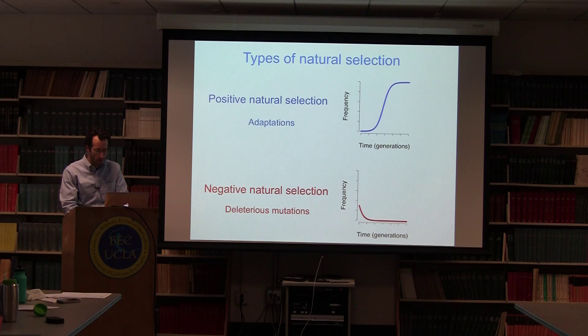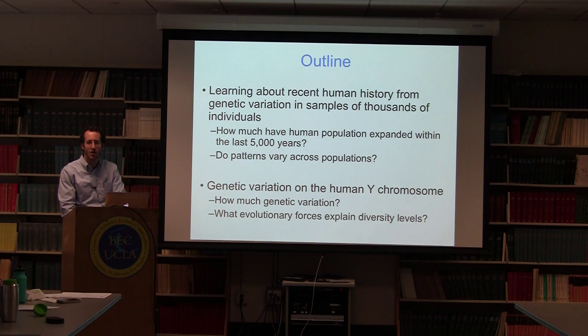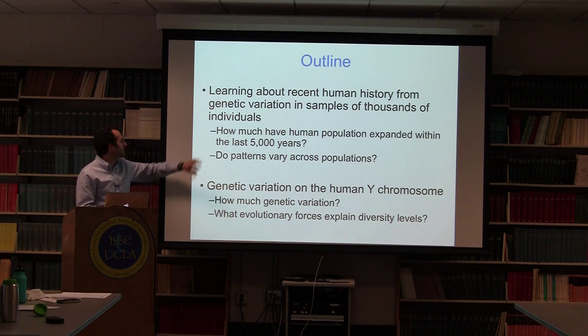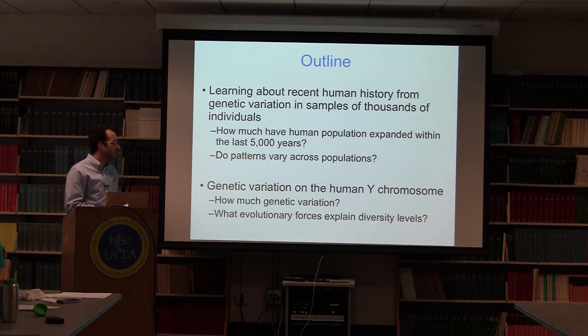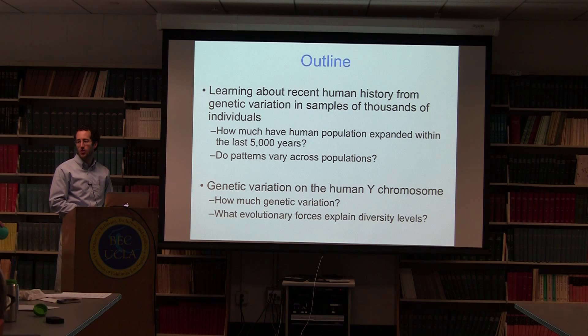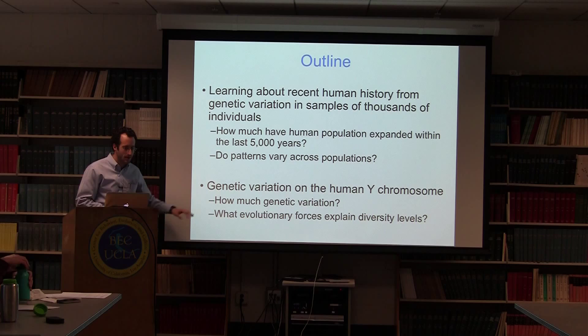In my talk today I am going to tell you about two different projects, each aimed at understanding these broader questions in evolutionary genetics. The first topic is learning about recent human history within the last 5,000 years from genetic variation data from large samples of individuals, and in particular comparing how patterns of growth vary across different populations. The second part will be focused on looking at genetic diversity on the human Y chromosome and what evolutionary explanations might account for the diversity levels seen there.